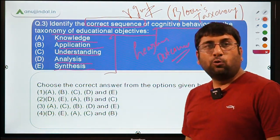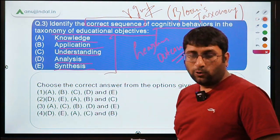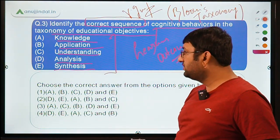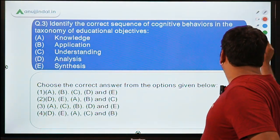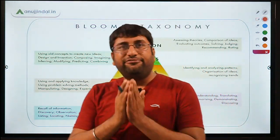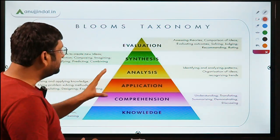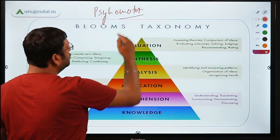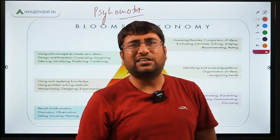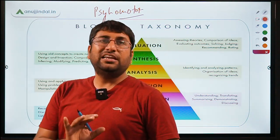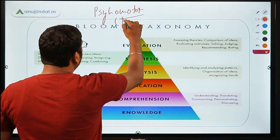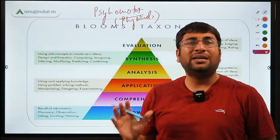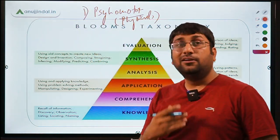There are three domains. First is the psychomotor domain, which covers physical skills — running, walking, dancing — all activities related to physical learning. Second is the cognitive domain. Cognitive means understanding — things you learn through mental activity. For example, when I explain Bloom's Taxonomy to you right now, your mental faculties are working to understand the concept — that is the cognitive domain.